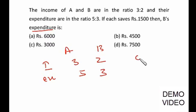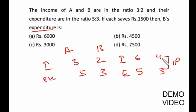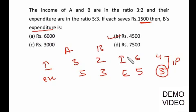So income ratio becomes 6:4 and expenditure ratio is 5:3. The difference between income and expenditure for each person is one part, and this one part is given as 1500. We have to find out the expenditure of B, which is 3 parts. If one part is 1500 then three parts will be 4500. From this data you can also calculate A's income, B's income, and A's expenditure very easily.